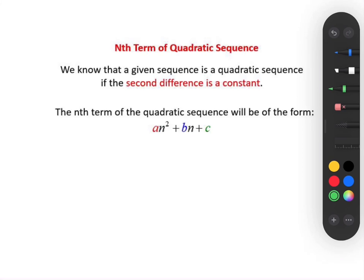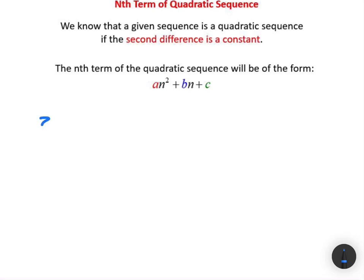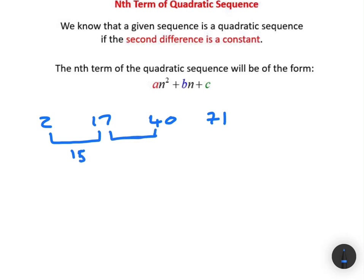Let's evaluate a few sequences to see whether they are quadratic or not. For instance, let's say we have 2, 17, 40, and 71. Let's evaluate it and see if the second difference is a constant. The difference between 2 and 17 is 15, between 17 and 40 is 23, and between 40 and 71 is 31. These are the first differences.